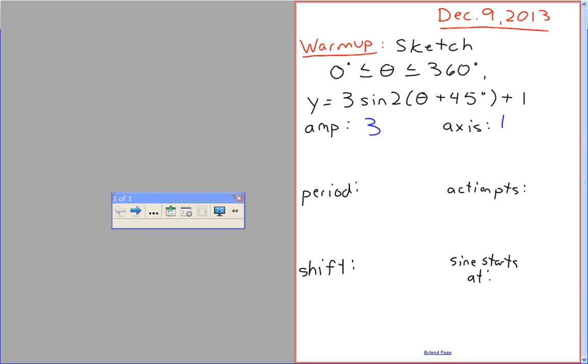Axis is 1, good. Desiree, can I get another piece of information please? Period is 360 over 2 equals 180. Very good.